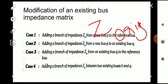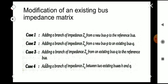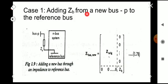We are adding a branch impedance Z_b to Z_original, and this can happen in four cases. Case 1: adding a branch of impedance Z_b from a new bus p to the reference bus. Case 2: adding Z_b from a new bus p to an existing bus q. Cases 3 and 4 follow similarly. Here is the picture representation — an existing n-bus system with a new bus p added via impedance Z_b to the reference bus.